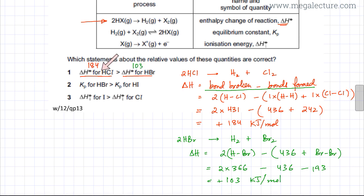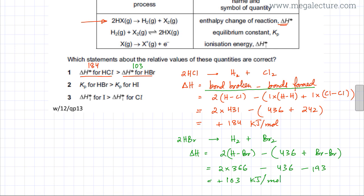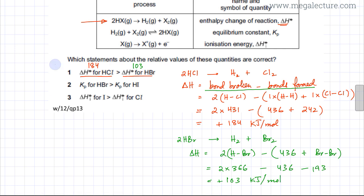Looking at the first statement — the enthalpy change for HCl is greater than the enthalpy change for HBr — this is a correct statement because we get +184 kJ/mol for HCl and +103 kJ/mol for HBr. So the first statement is correct.